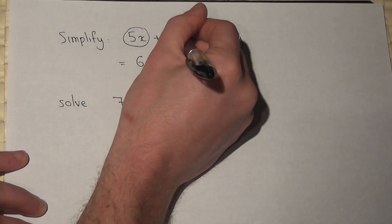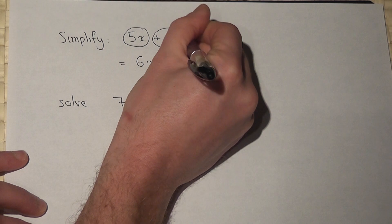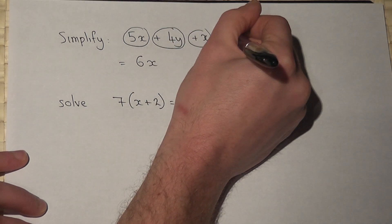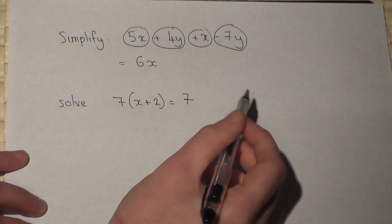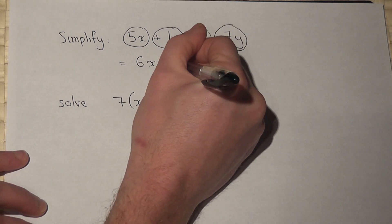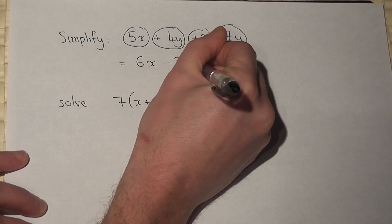But if I look at the y's, I've got a 4y but I'm taking away a 7y. And 4y take away 7y becomes negative, it becomes negative 3y.